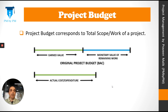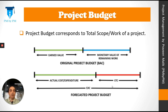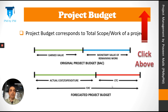Let's look at the project budget again. On the control date, we have already completed some work, which can be expressed as EV, and we have already spent some money, which can be expressed as AC. But we need to do some more work, which can be expressed as ETC, or estimate to complete.